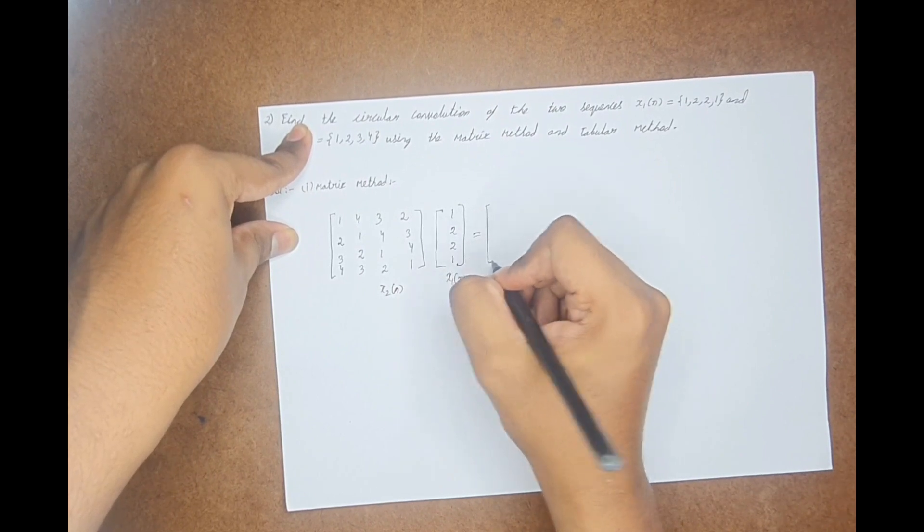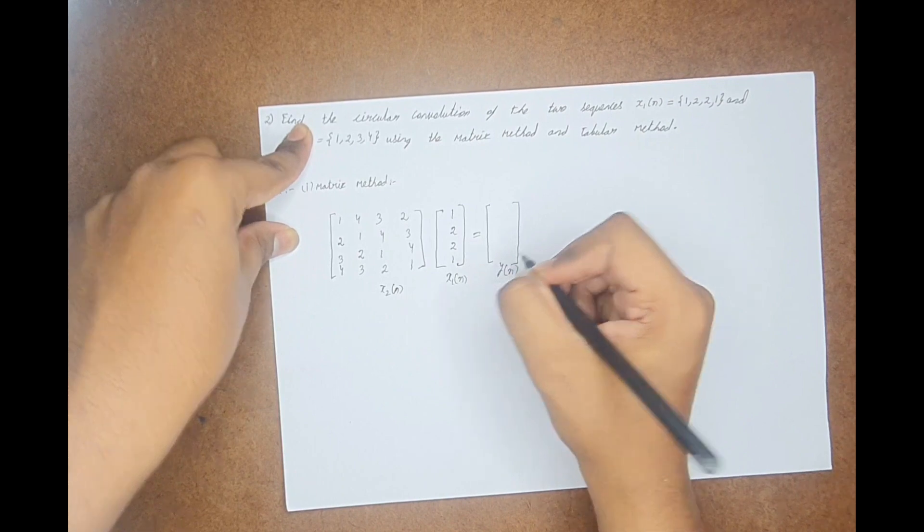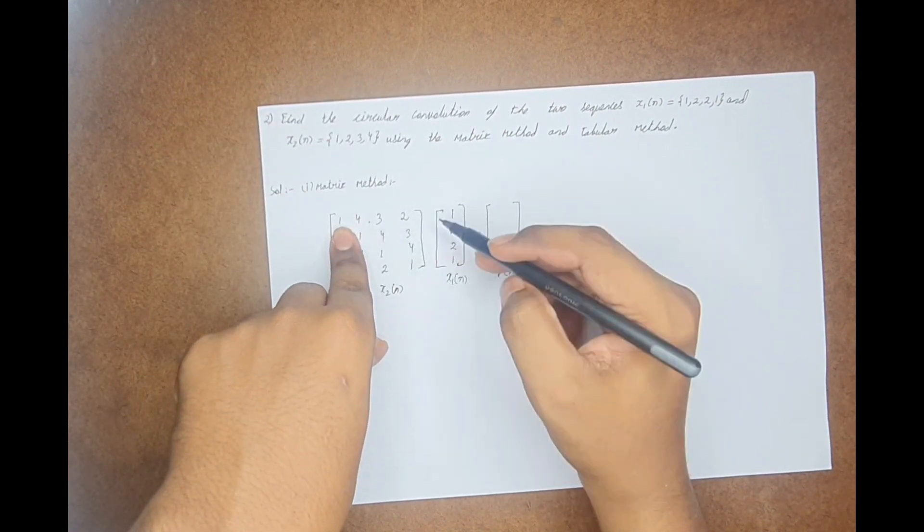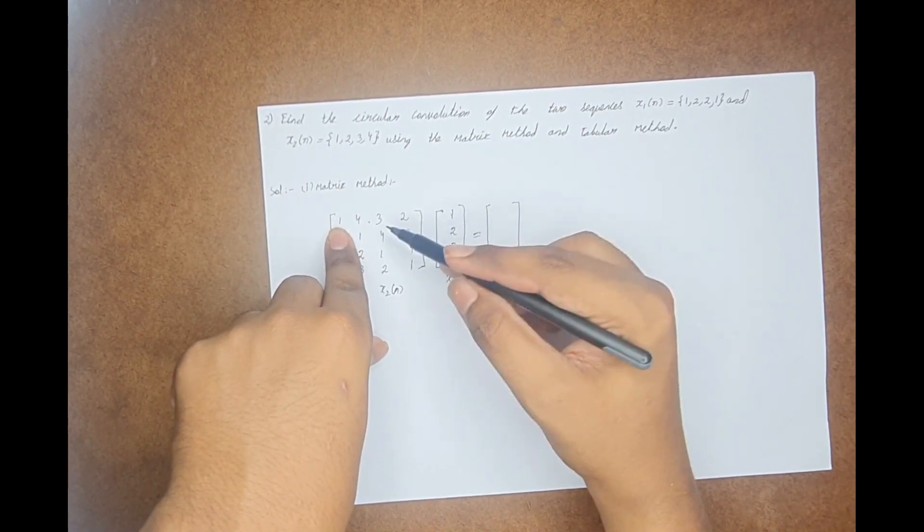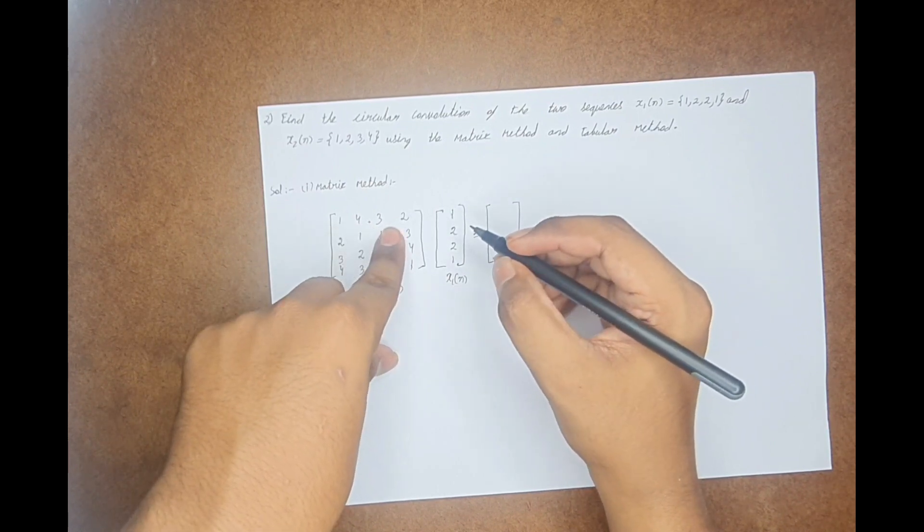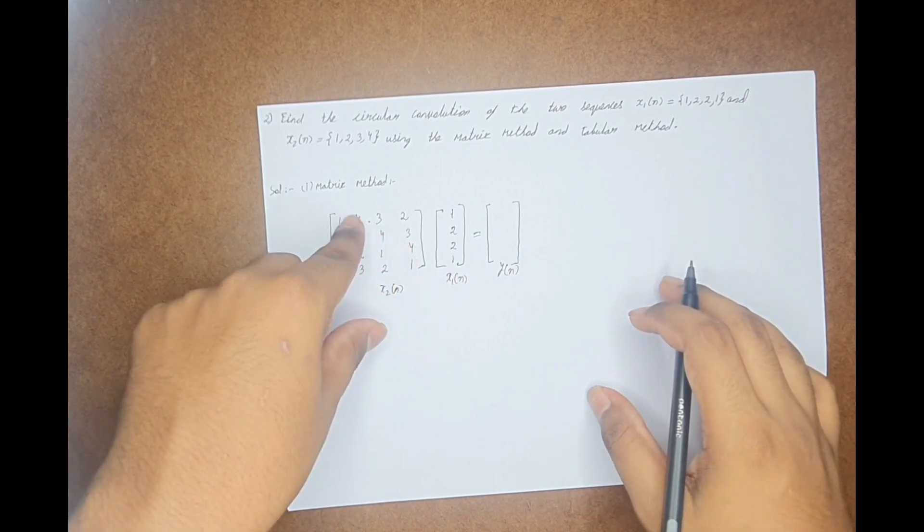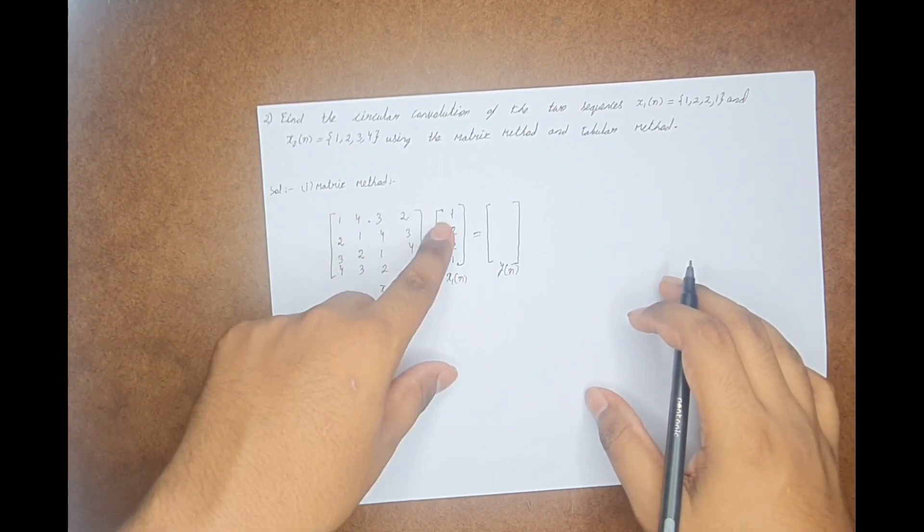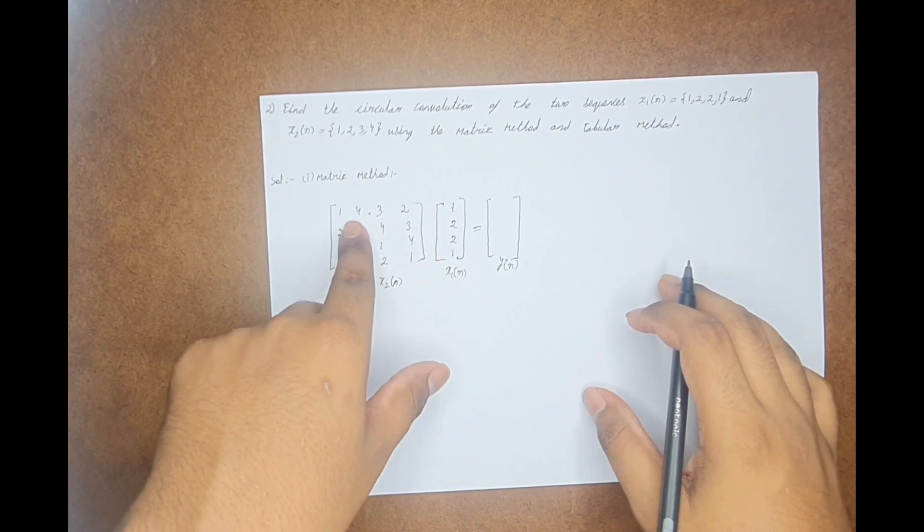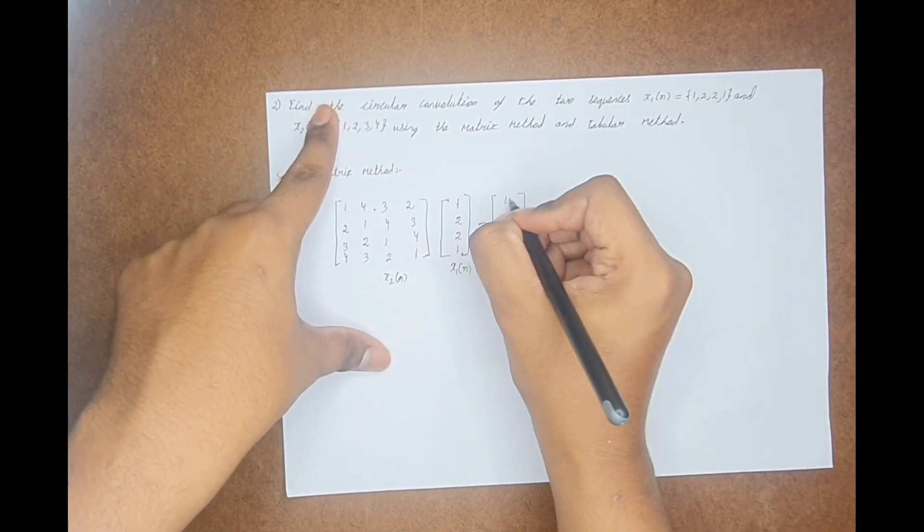Now, I will get y(n), which is nothing but this. Just multiply this row with this column, which is matrix multiplication. So you have 1 plus 8 plus 6 plus 2. You have 1 plus 8 is 9, 9 plus 6 is 15, 15 plus 2 is 17. That is my y(0).